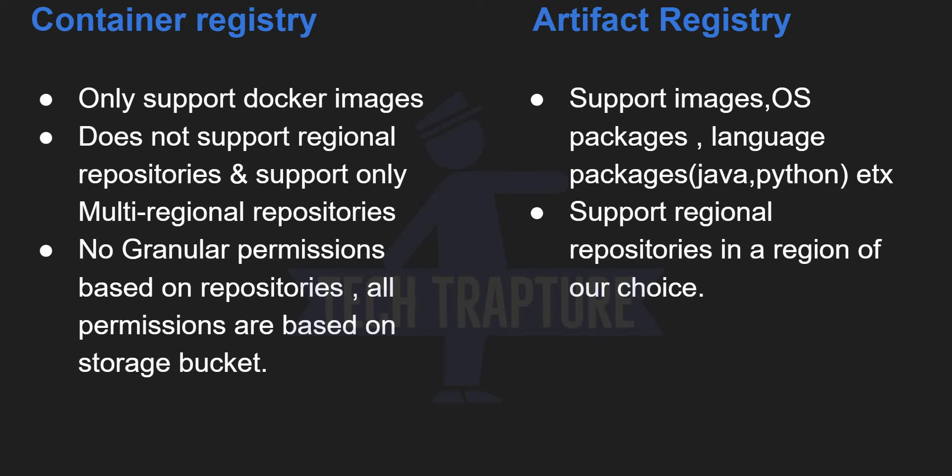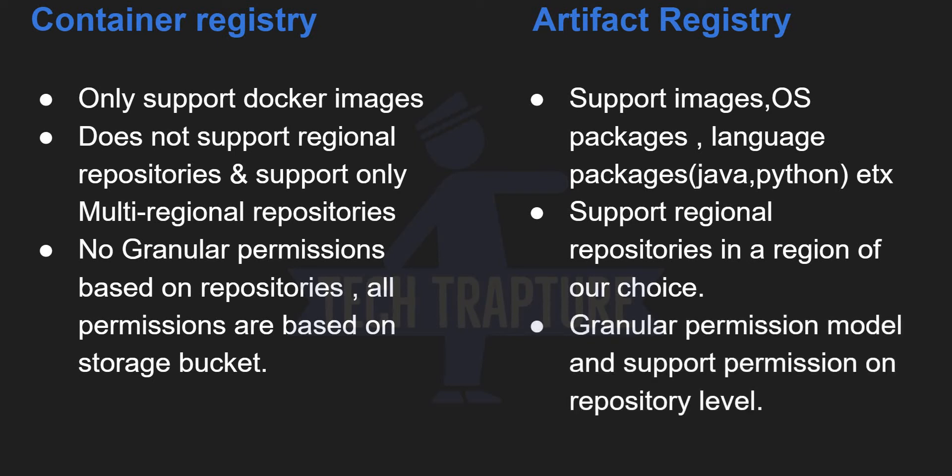In Artifact Registry you can choose your format while creating a repository — whether you want to store images or artifacts. You can also assign access at a particular repository level, unlike Container Registry where you only assign access at the storage bucket level. Now I'll go to the Cloud Console and show you how Container Registry and Artifact Registry look.